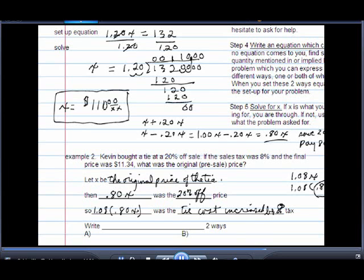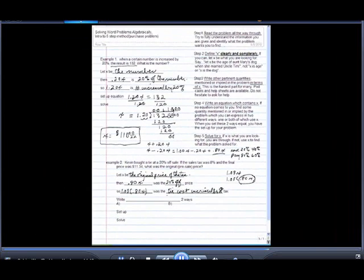Okay. Now we've got a bunch of stuff here. We've got the original cost of the tie, which was x. We've got the 20% off price .80x. We've got the cost of the tie after the sales tax, which was 1.08 of 80% of x. What the heck equation do we write?